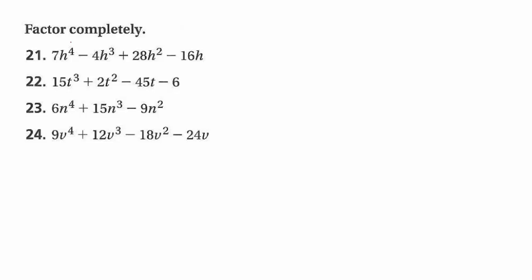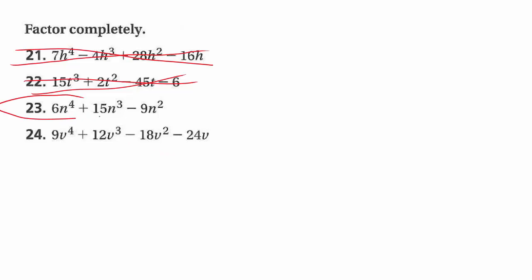Since we didn't go over section 7.8, which is factoring by grouping, we're not going to cover numbers 21, 22, or 24. The ones where there are four terms — don't worry about those. Just focus on number 23.